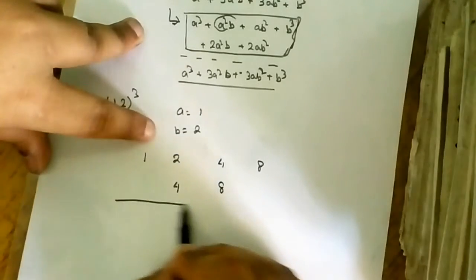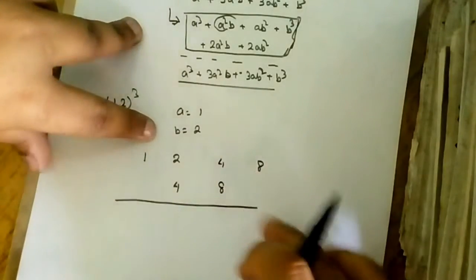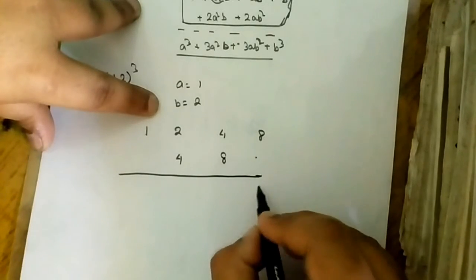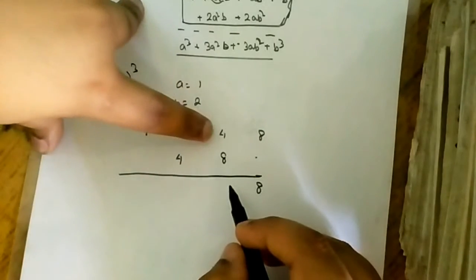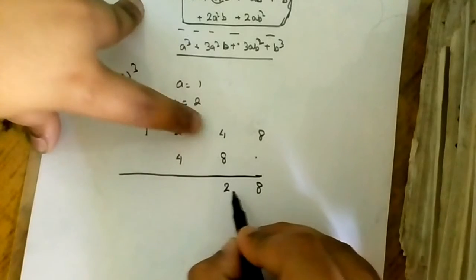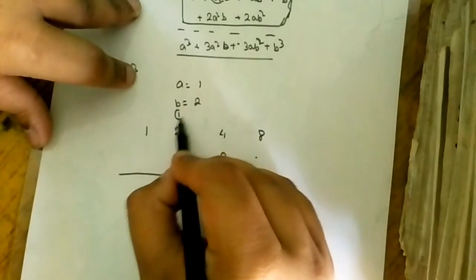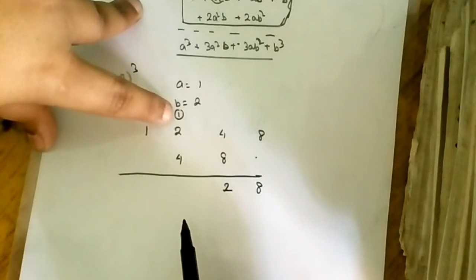Now I have to just add this. Now 8, there is nothing, that means there is 0. 8 plus 0 is 8. Now 8 plus 4 is equal to 12. Now I will write 2 and the remaining one would be the carry. The carry will be 1 and this carry will add